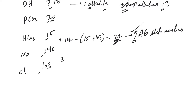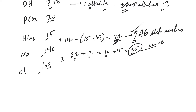The next step: the anion gap is 22. We measure the excess anion gap — the normal anion gap is 12 — so excess anion gap is 22 minus 12, which equals 10. We add this to the measured bicarb of 15, giving us 25. Comparing this to normal serum bicarb of 22 to 26, it's within the normal range. That means we stop here — there is no further acid-base disturbance.